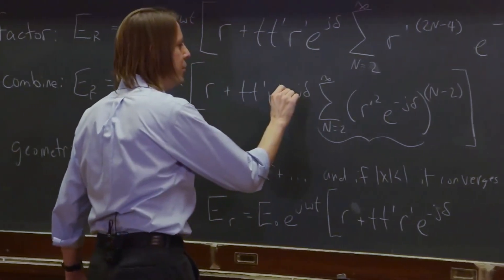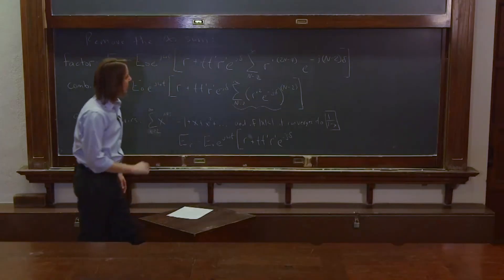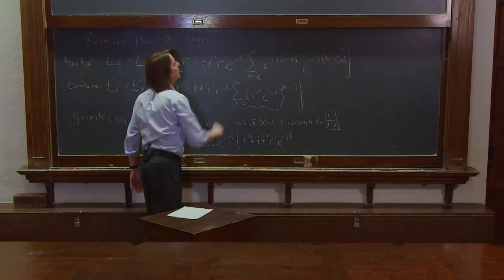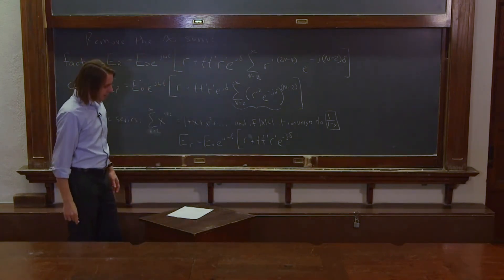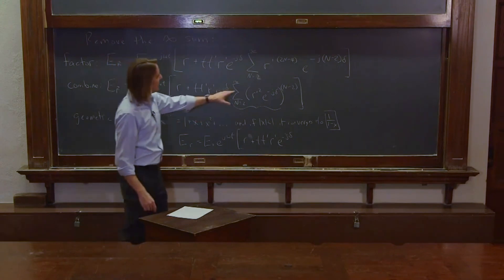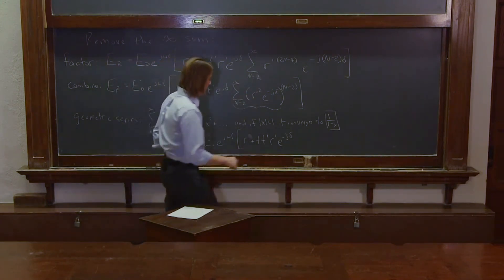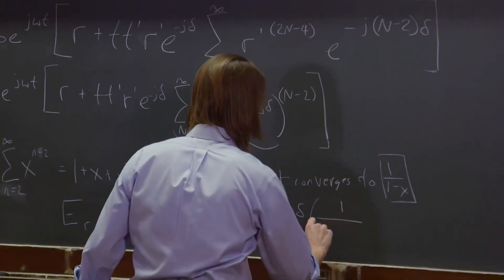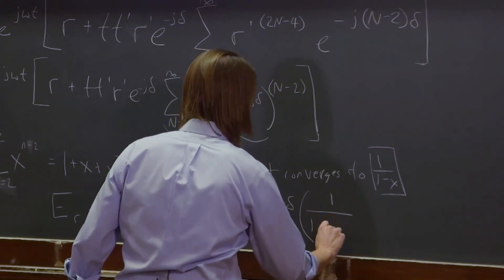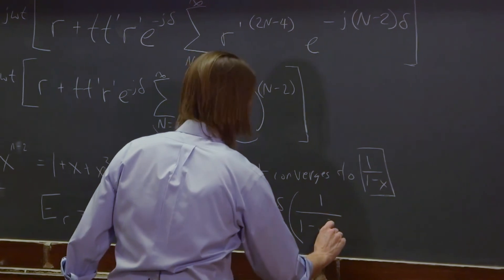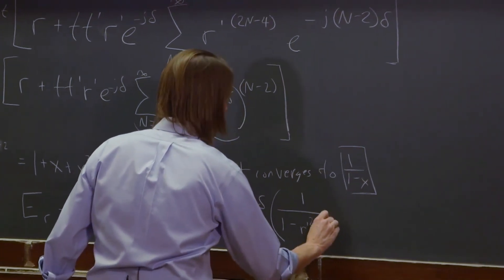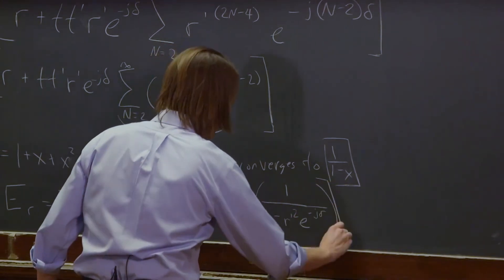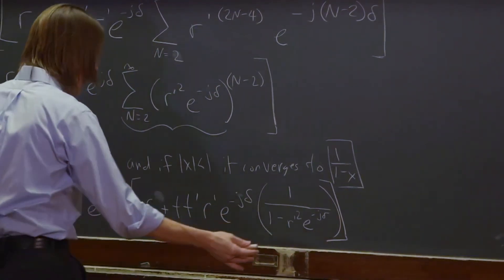And you're sitting there smugly noticing that I forgot that minus sign. Here, and I forgot it here. Yeah. E to the minus J delta. Yeah, we're going to replace this with 1 over 1 minus that. Okay, times 1 over 1 minus R prime squared E to the minus J delta. And that's our E field.